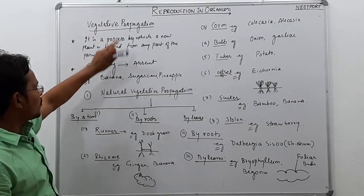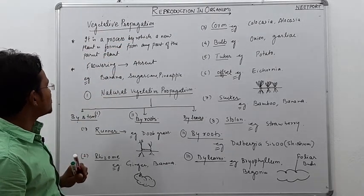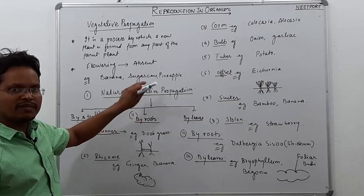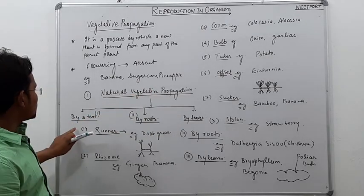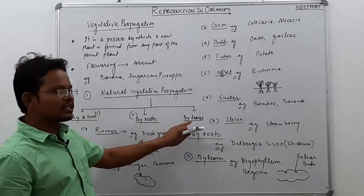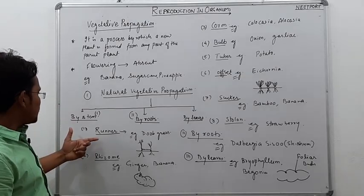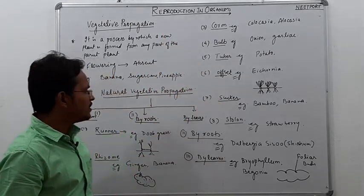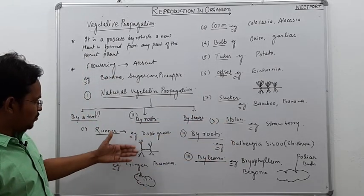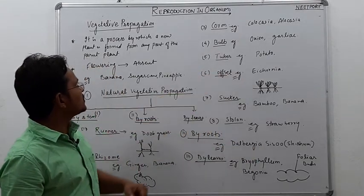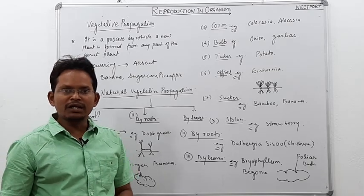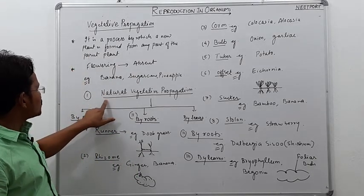So this is vegetative propagation. Let's quickly revise vegetative propagation once. Vegetative reproduction can be studied by natural vegetative propagation, where natural vegetative propagation is of three types or by three methods: by stem, by roots, and by leaves. By stem examples are runner, rhizome, corm, bulb, tuber, offset, sucker, and stolon. By roots we have seen examples here. This way vegetative reproduction has been studied in detail by natural vegetative propagation.